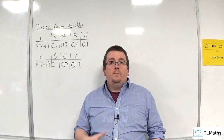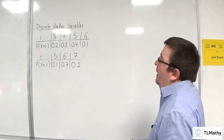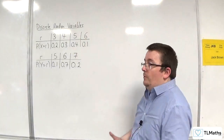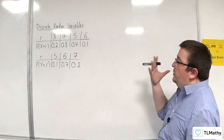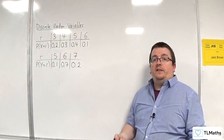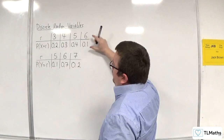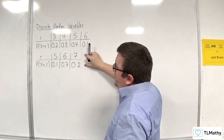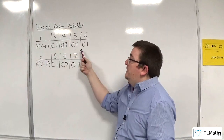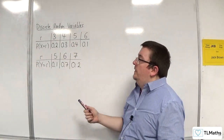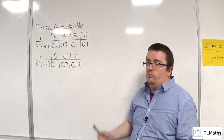In this video we're going to do a little bit of exploratory work, which we've been doing throughout this section. We've got here two discrete probability distributions — this one is for x and this one is for y. The x values can take on 3, 4, 5, and 6 with their respective probabilities, and the y's can take on 5, 6, and 7 with their probabilities.